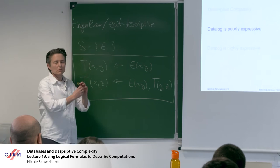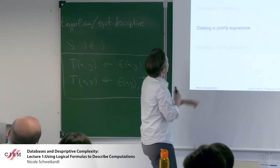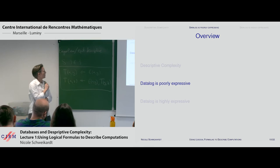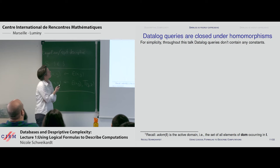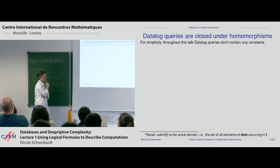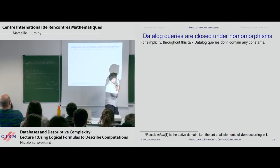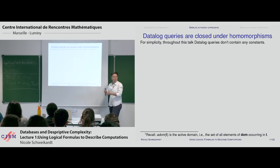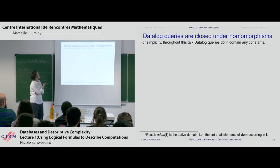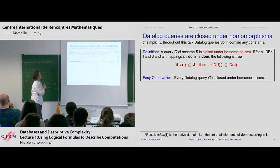You can express non-local things — things far away in the graph get connected because there's a path. On the other hand, I'd like to show how poor the expressive power of datalog is. One powerful tool is showing that queries are closed under homomorphisms. For simplicity, queries in this talk won't contain any constants.